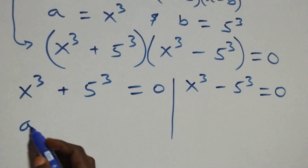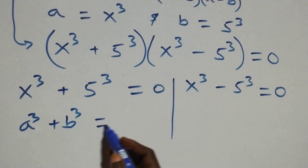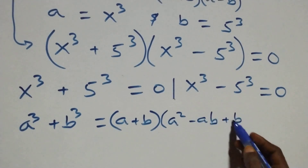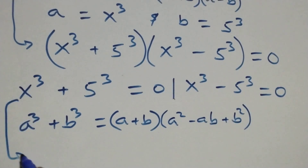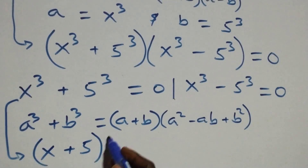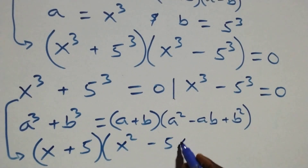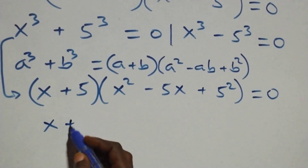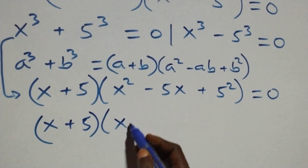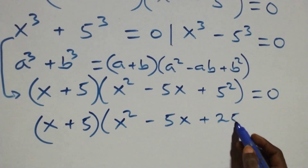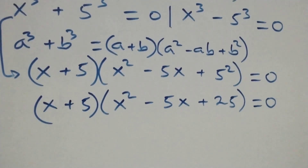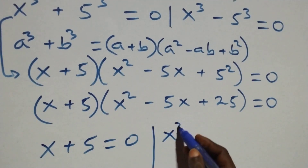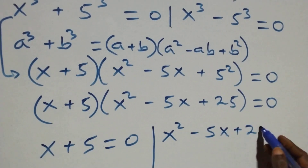Solving the first case, this follows from a cubed plus b cubed, which is the same as a plus b, into brackets, then open bracket a squared minus ab plus b squared. So all we have becomes x plus 5, into brackets, then open bracket x squared minus 5x plus 5 squared, close bracket, equals to 0. That is x squared minus 5x plus 25 equals to 0.